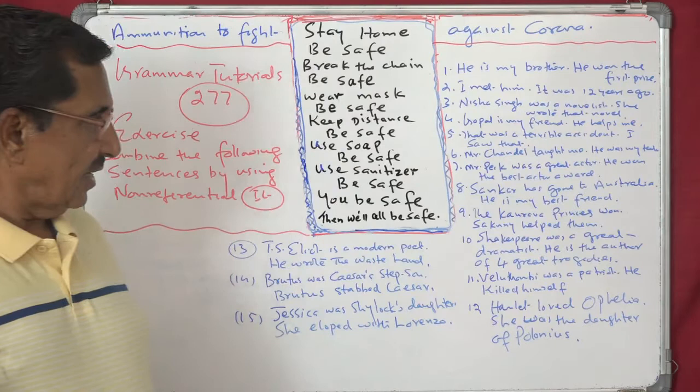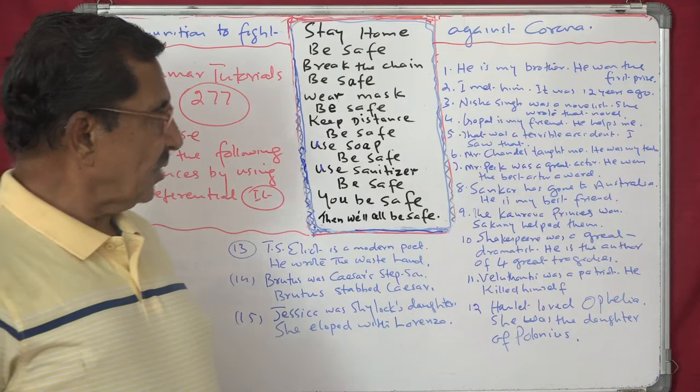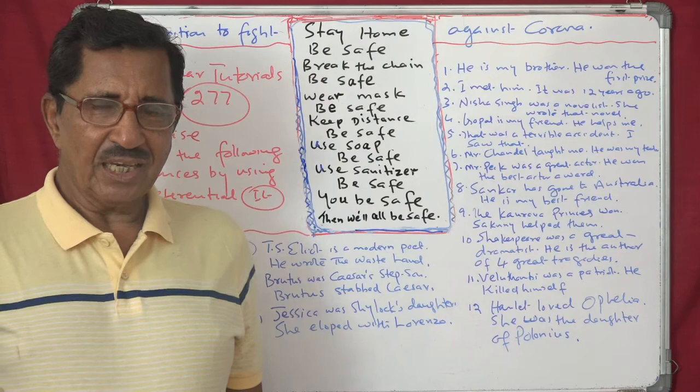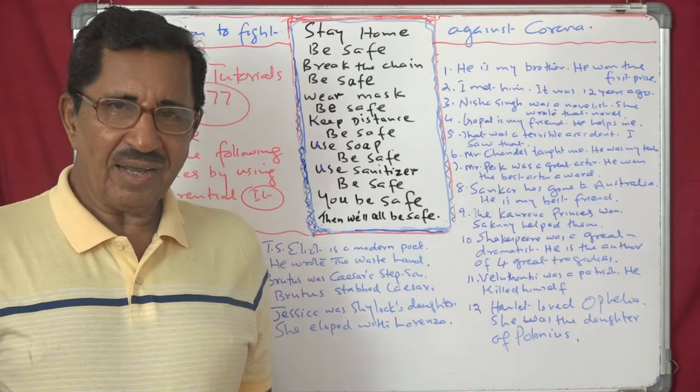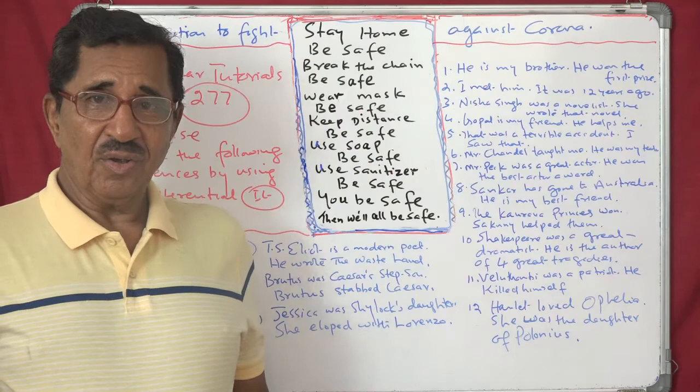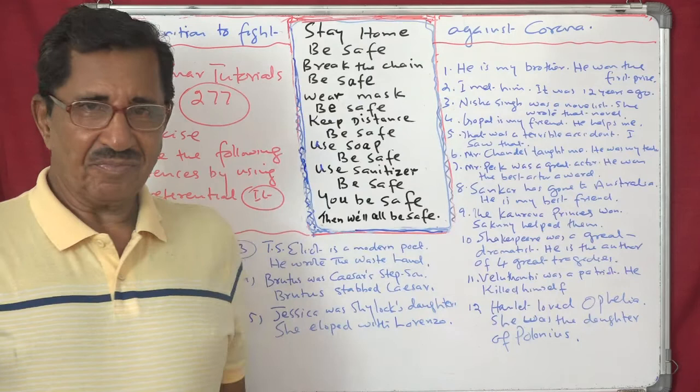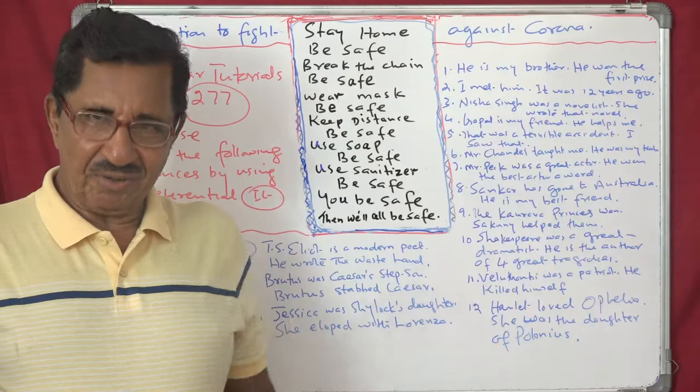Ninth one — 'The Kaurava princes won. Shaguni helped them.' Combined: 'It was Shaguni who helped the Kaurava princes to win.'